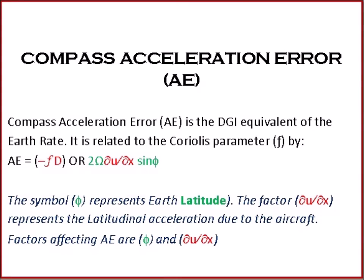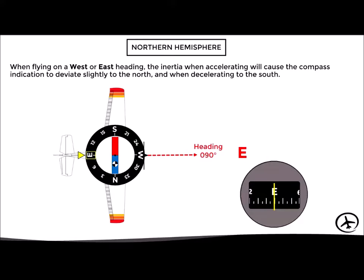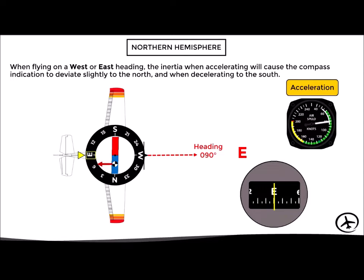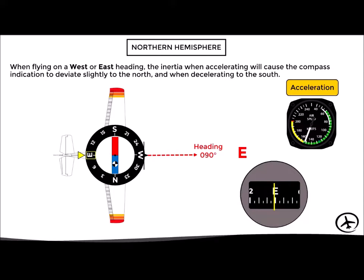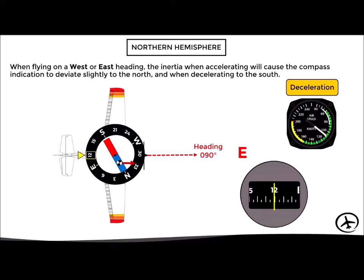Here we have an aircraft flying east on heading 090. If the aircraft accelerates, inertia will pull the magnet's center of gravity backward, causing the compass to give a false turn indication to the north, although the aircraft is still flying on the same heading. This effect continues as long as the aircraft accelerates; once acceleration stops and the aircraft returns to constant speed, the inertia disappears and the compass gradually returns to the correct heading. Conversely, if the aircraft decelerates, inertia pulls the magnet's center of gravity forward, causing a false turn indication to the south, again persisting until deceleration ends.